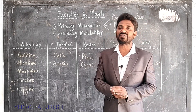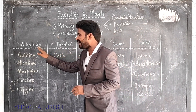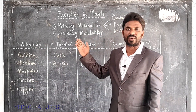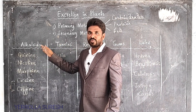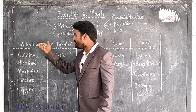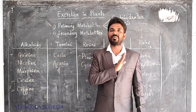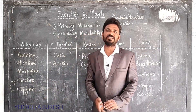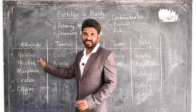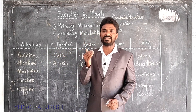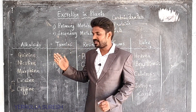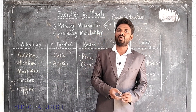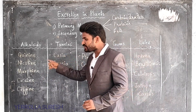What are the uses of these secondary metabolites? First, alkaloids. Alkaloids are nitrogenous waste products, but human beings identified their benefits and use them for different purposes. Examples are quinine, nicotine, morphine, cocaine, and caffeine. Quinine is extracted from Cinchona officinalis and is used as an anti-malarial drug. Nicotine is produced from Nicotiana tabacum, the tobacco plant, and is used as an insecticide.